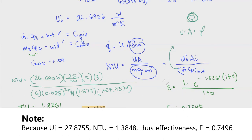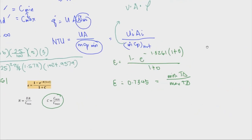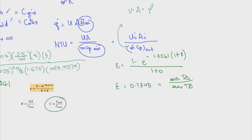We know that effectiveness can be related to the minimum temperature difference over the maximum temperature difference. The maximum temperature difference is always the inlet of the hot fluid minus the inlet of the cold fluid — that's always given. The minimum temperature difference in this case is brought by the initial temperature of the hot fluid minus its outlet, because our pipe is exposed to the 20°C environment, which is cooler. So basically: E = (THI - THO) / (THI - TCI).